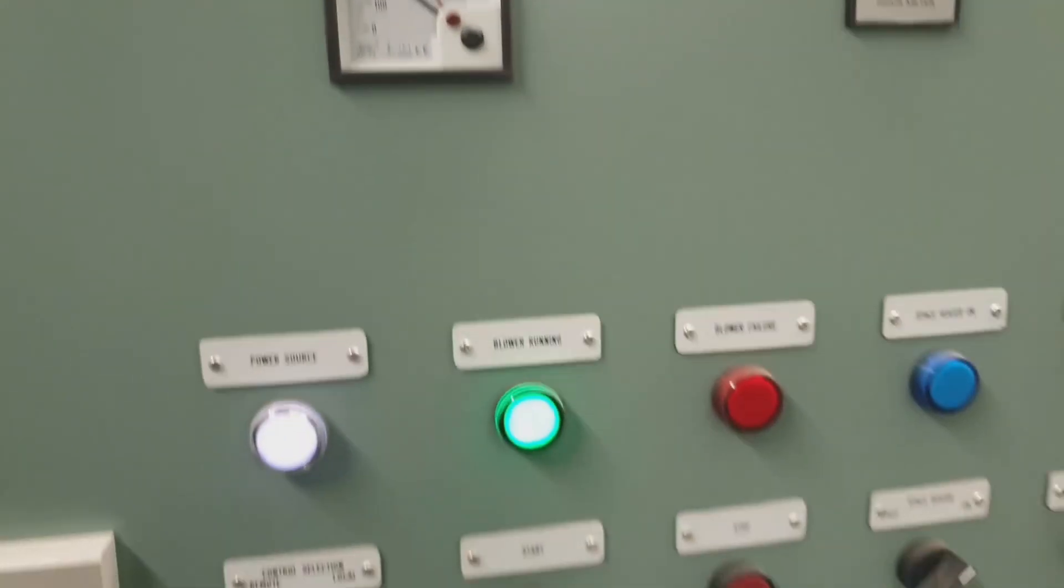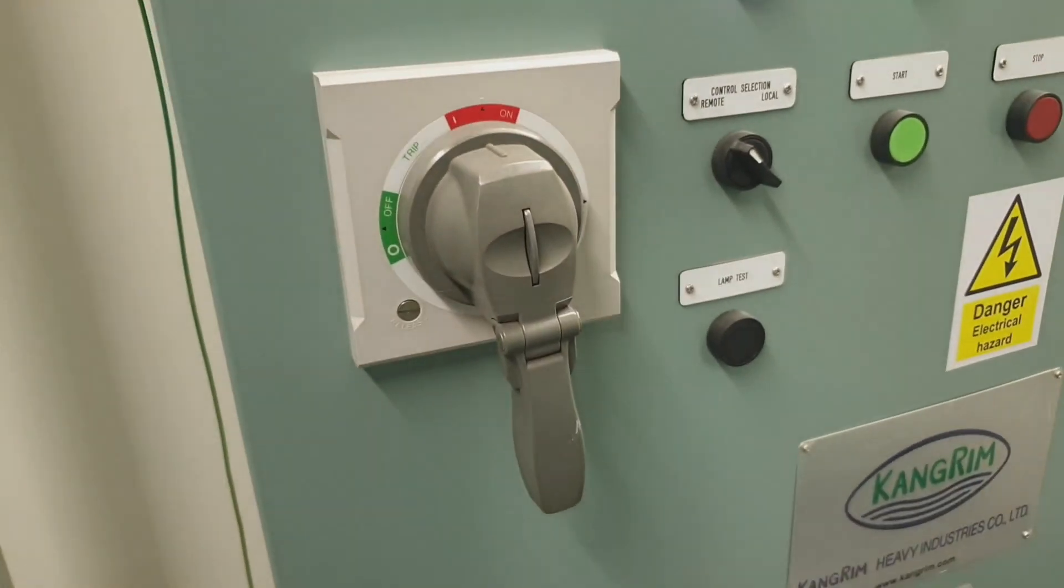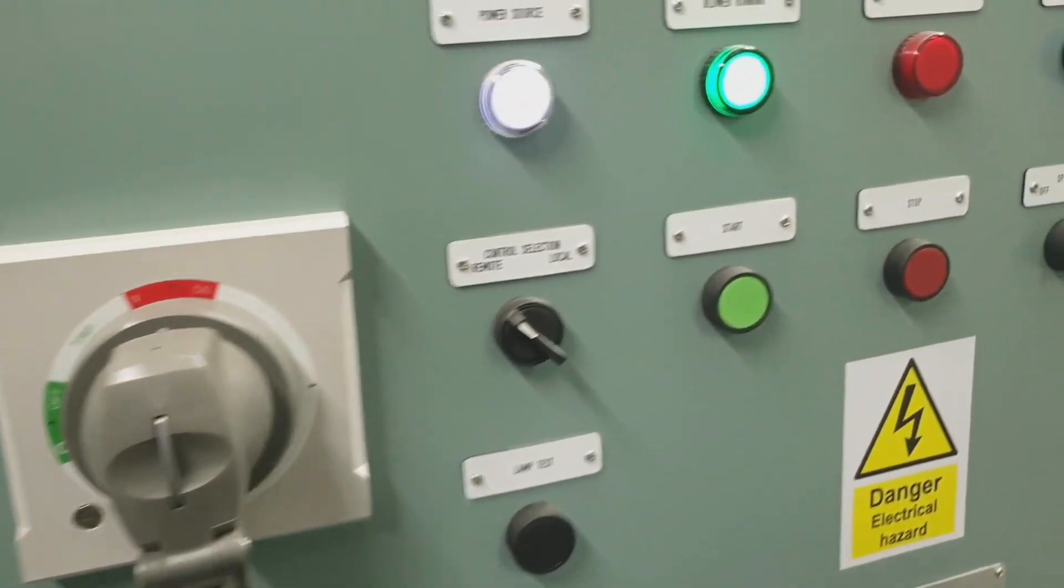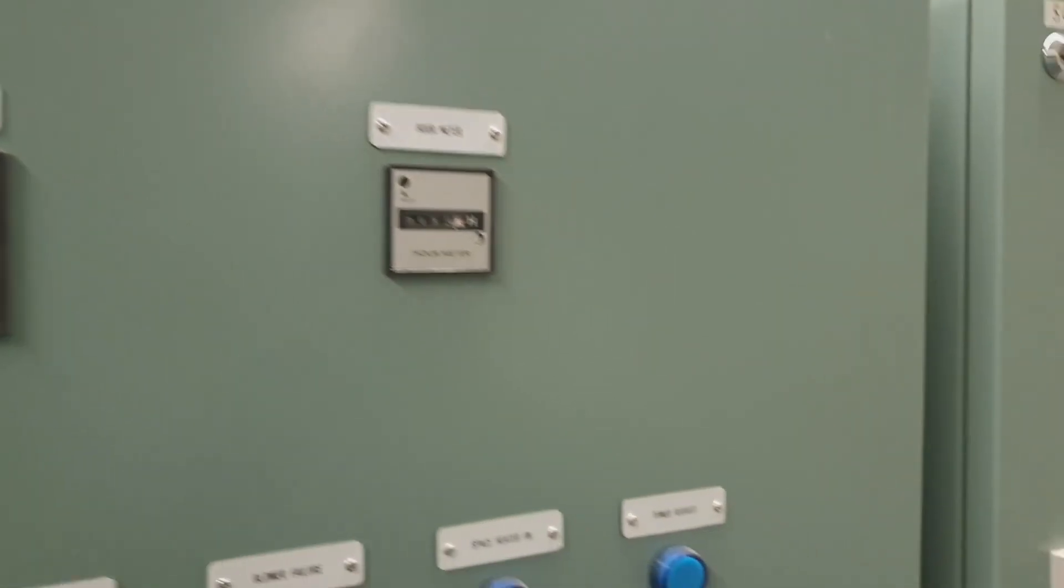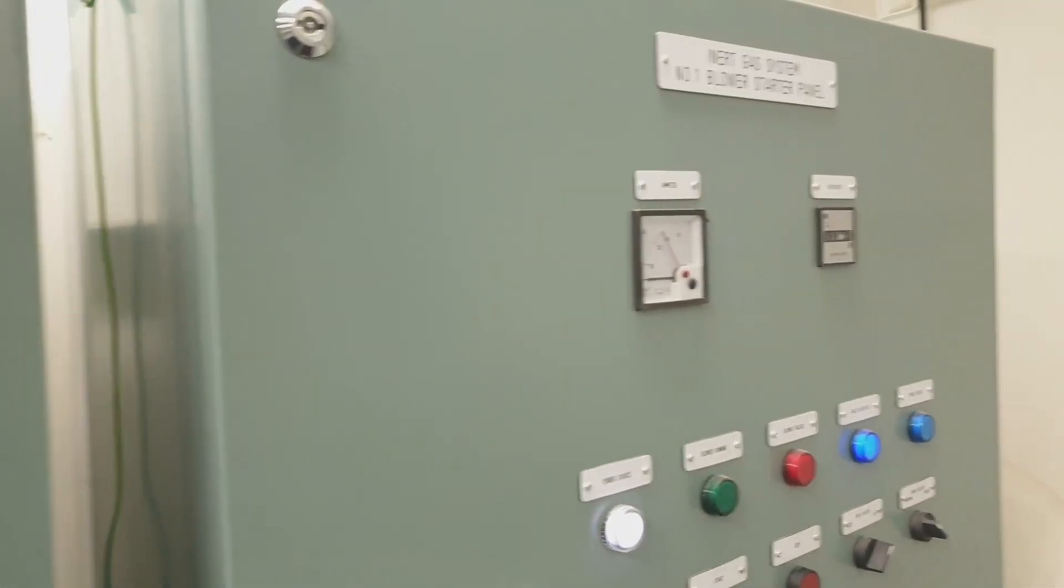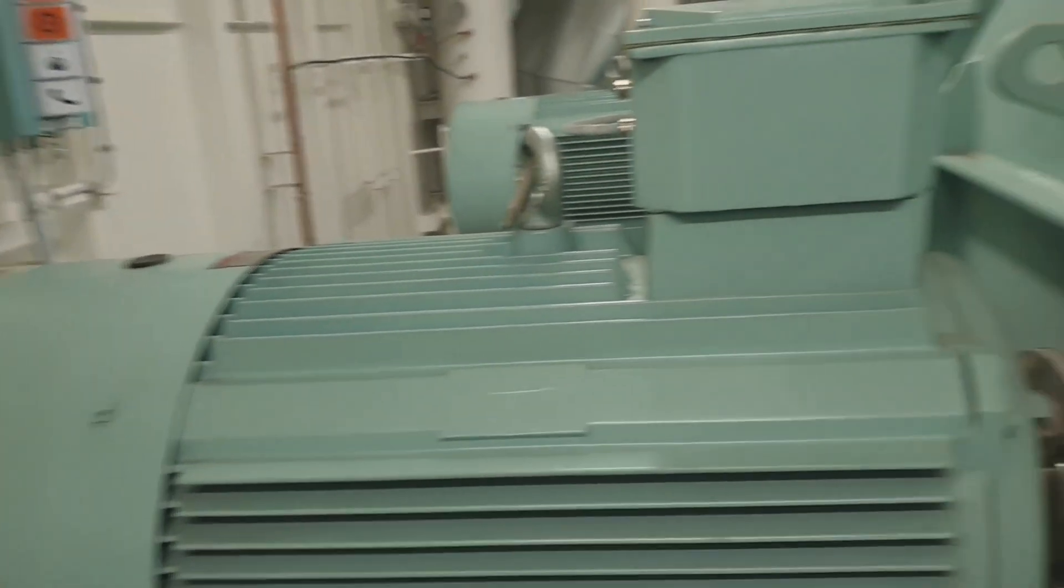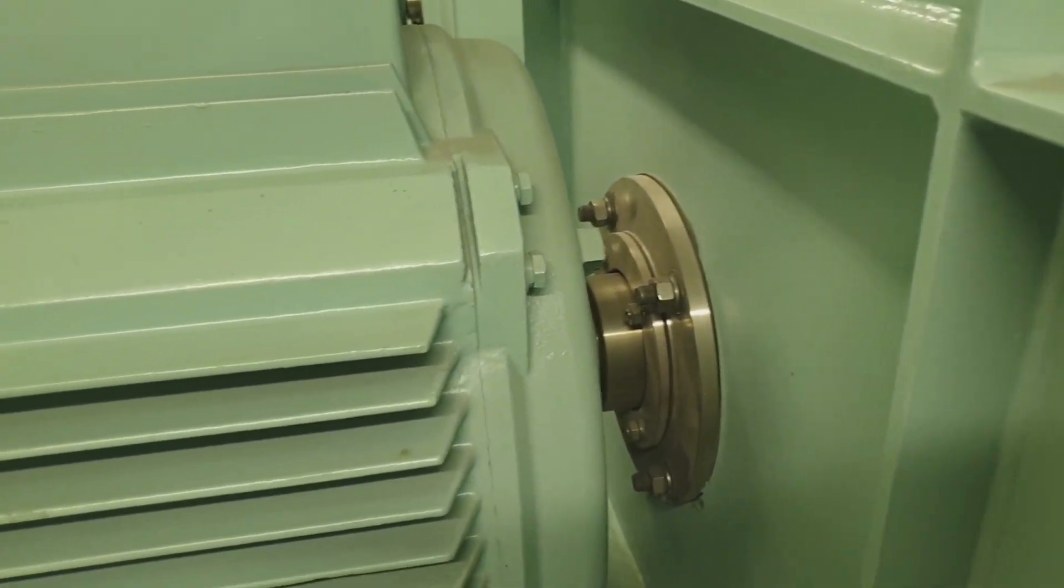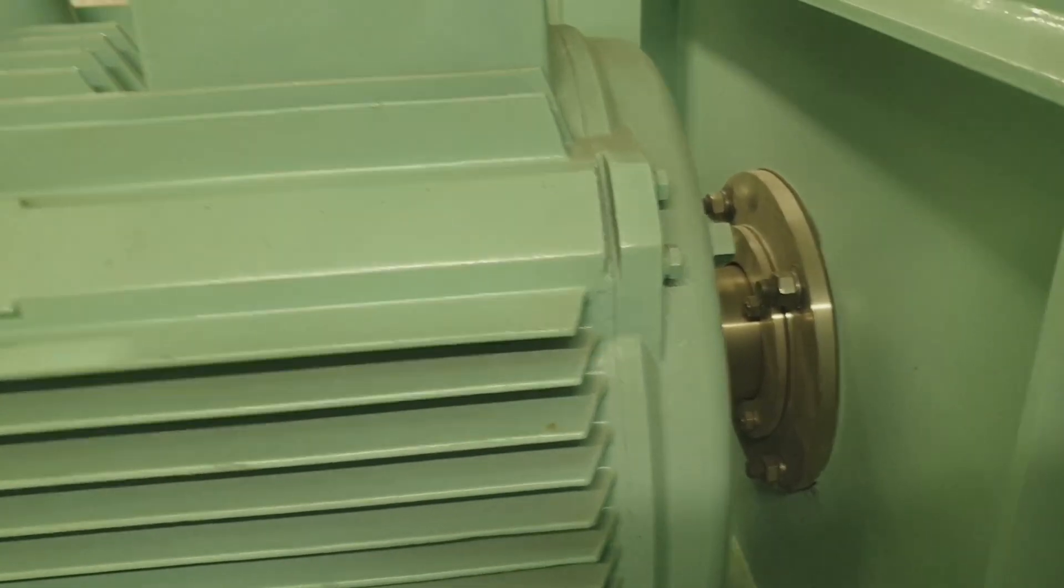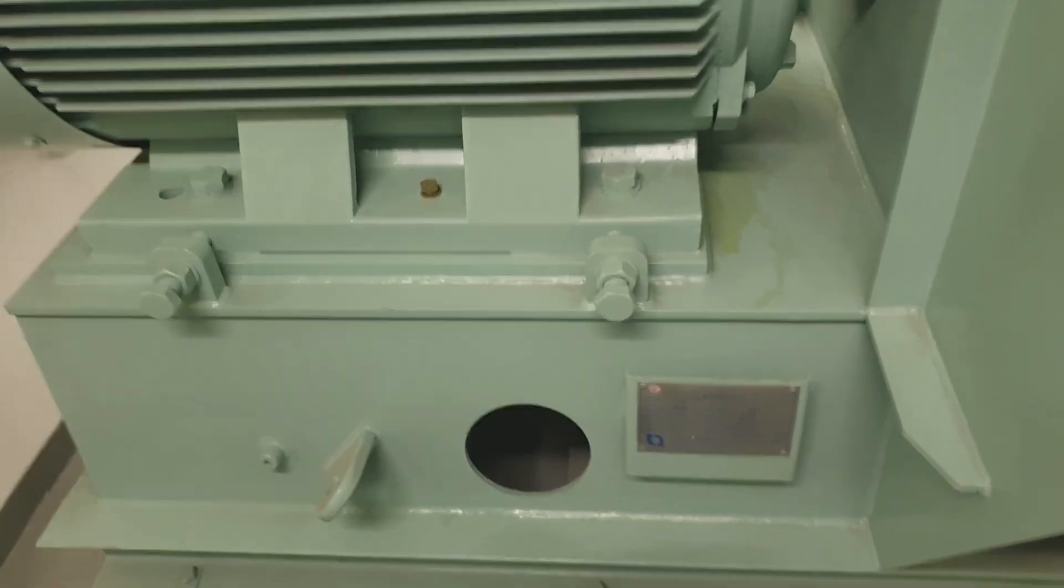In this video, I would like to show you the main components of the inert gas system and its function. As you notice from the first video, this is the inert gas blower, or inert gas fan, which pushes the inert gas to the cargo tanks. The inert gas blower capacity is 11,350 cubic meters per hour.